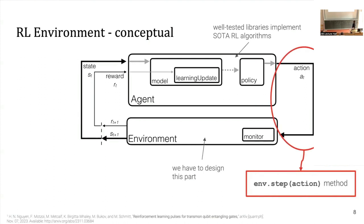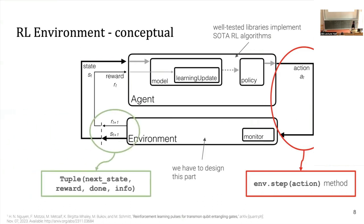We have to implement the step method, which is boilerplate code. Step tells us to move one time step into the future while applying a specific action. It returns a four-tuple: the next state, the reward for the current time step, a Boolean signal called 'done' indicating whether an episode has finished, and info containing environment details such as episode length. An episode is analogous to one full run — from start to landing for the lunar lander, for example.